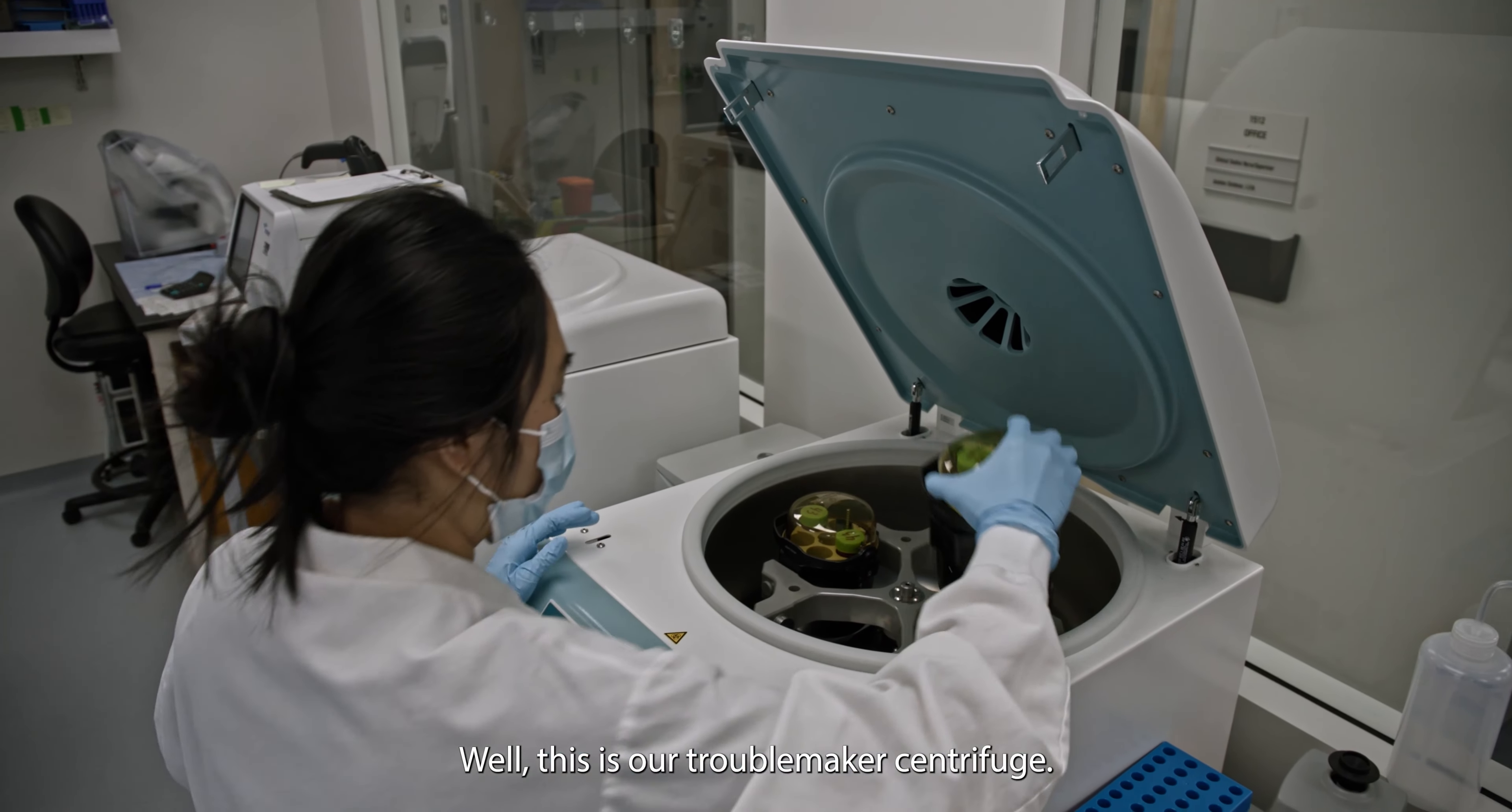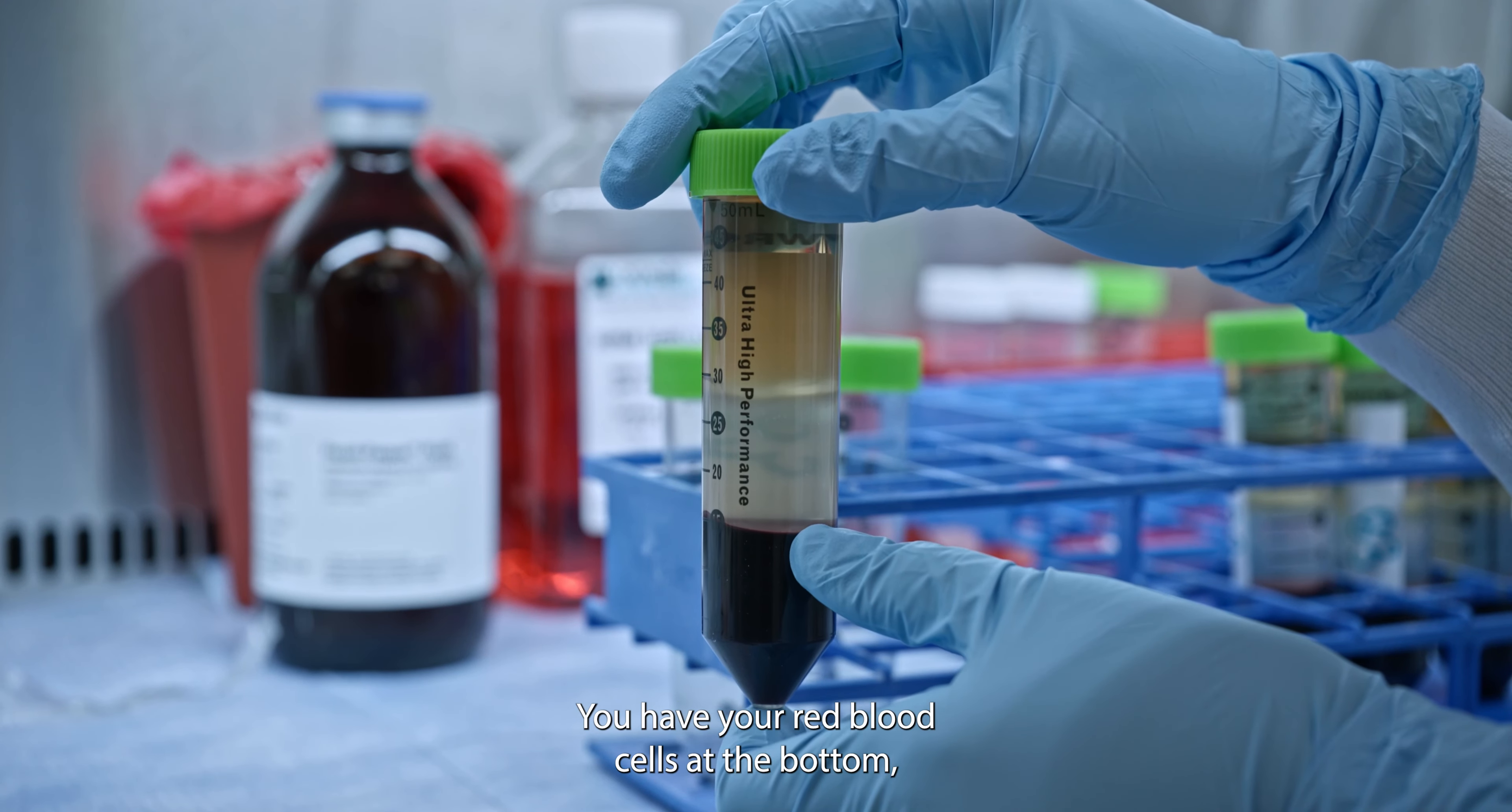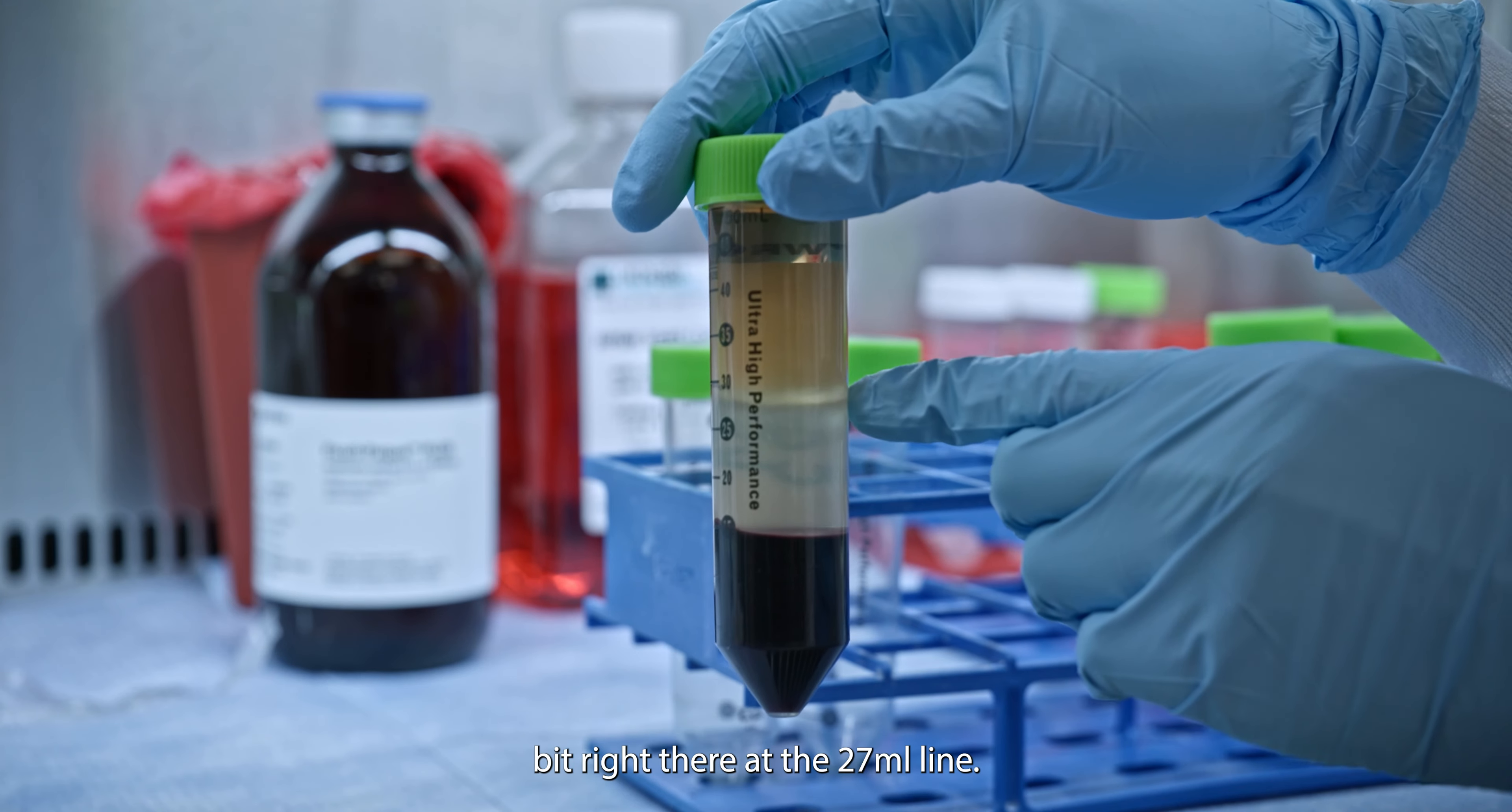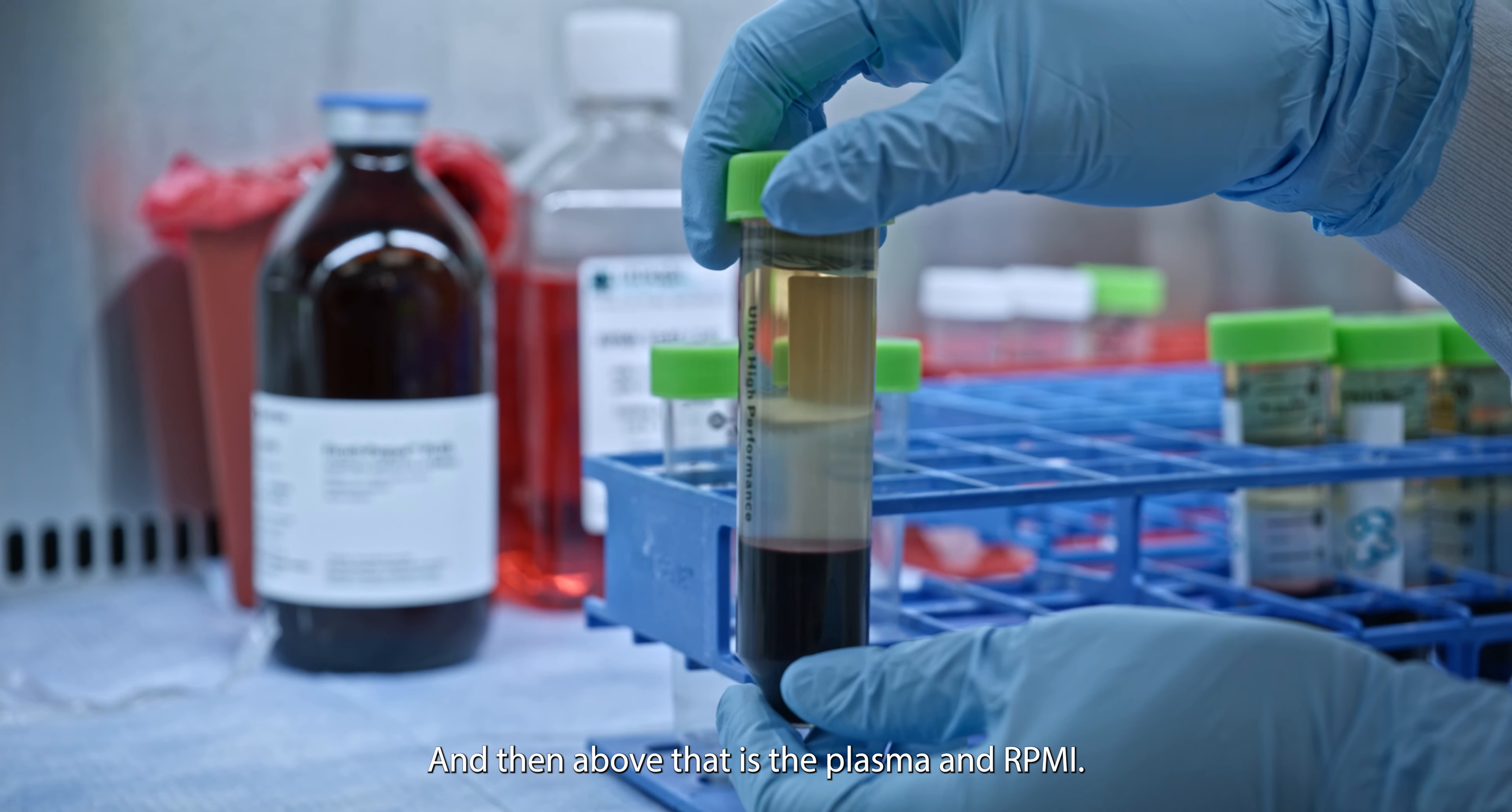This is our troublemaker centrifuge. Gotta slam it. This is a fully spun down Ficoll tube. You have your red blood cells at the bottom, the Ficoll media, the second layer, and then you have your layer of white blood cells. That cloudy bit right there at the 27 ml line. And then above that is the plasma and our RPMI.